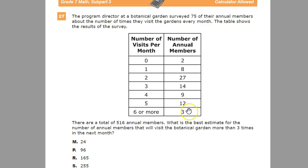Those three people who come six or more times — they're either really liked by the staff or not liked at all. It's probably a mix. There are a total of 516 annual members. What's the best estimate for the number of annual members that will visit the botanical garden more than three times in the next month? They used a sampling process where they picked 75 annual members.